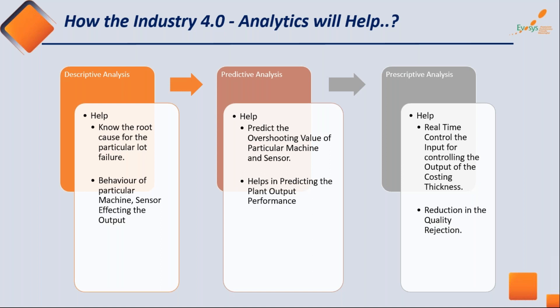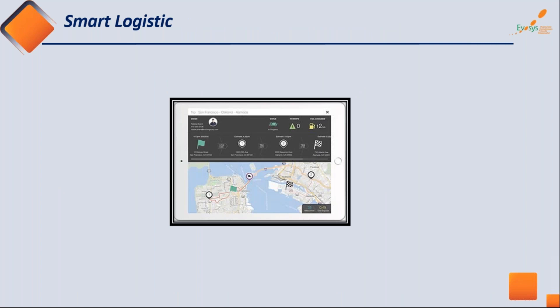For predictive analytics, we can predict overshooting values of particular machines and sensors, helping to predict plant output and performance. For prescriptive analytics, we can prescribe recommendations to achieve a reduction in quality rejection. This is most important for metal manufacturing — you can control final quality outcomes.